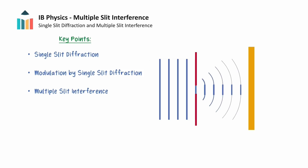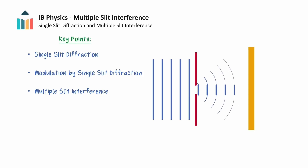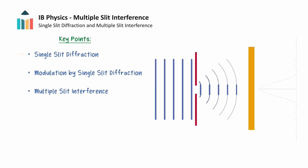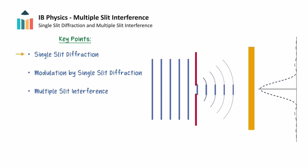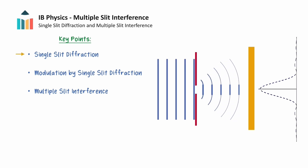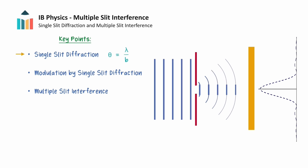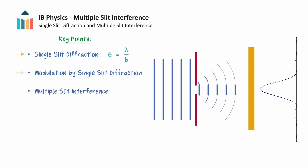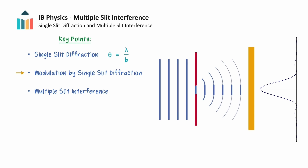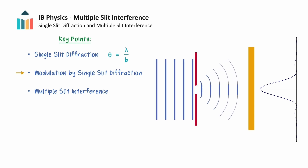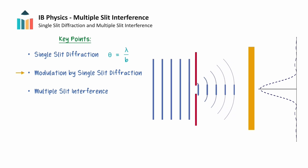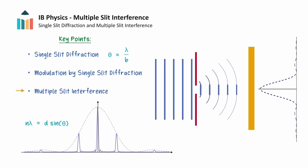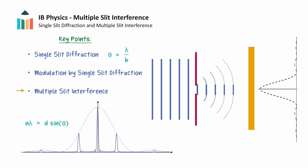In this video, we will explore the wave phenomena of diffraction and interference in more detail. We will show how interference patterns are produced from single slit diffraction, and how to determine the angle of the first diffraction minimum. We will then explain how the single slit intensity pattern modulates the double slit interference pattern. Afterwards, we will discuss the interference patterns produced from multiple slits and diffraction gratings.